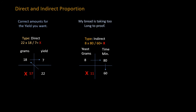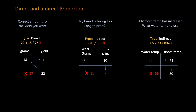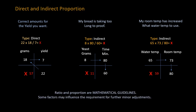You can go even further — for example, your room temperature has increased and you need to adjust water temperature. If you normally use 65-degree water and your room is around 73 degrees you get a good finished mixing temperature. But if your room goes up to 80 degrees, do the calculation: 65 times 73 divided by 80 — that tells you you'll need 59-degree water. Keep in mind ratio and proportion are mathematical guidelines; there may be minor adjustments needed, but if you learn ratio and proportion you can do a host of calculations and solve many problems easily.